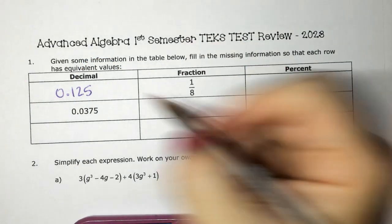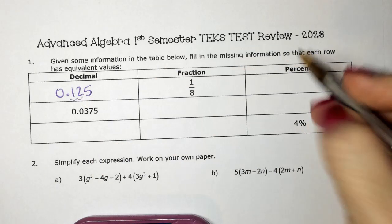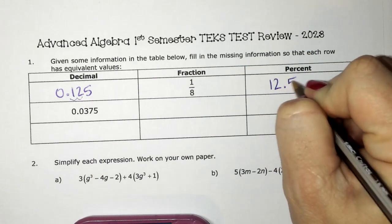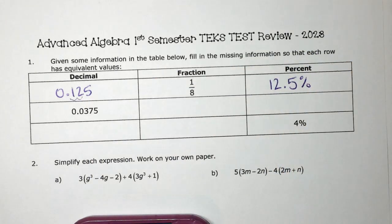And then to turn it into a percent, we would move the decimal twice and that would give me 12.5%.